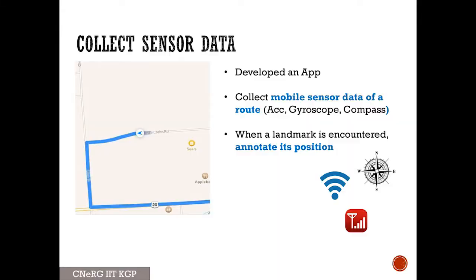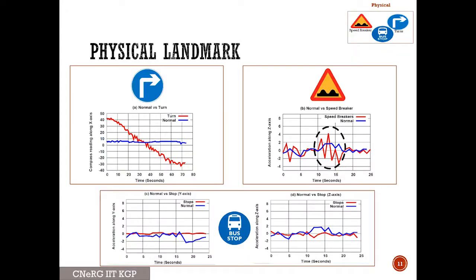So first we construct — a kind of training phase — the landmark database. We developed an app, which we'll show later, that collects sensor data using the inertial sensors and detects all the landmarks while commuting: bus stops, turns, or speed breakers. We engage a set of volunteers who run this data collection app, and when they encounter a landmark they annotate it, so we can have ground truth information about different landmarks. As this slide shows, using different sensors we can indeed identify different landmarks — for example, from the compass you can identify a turn, and from the accelerometer we can identify speed breakers.